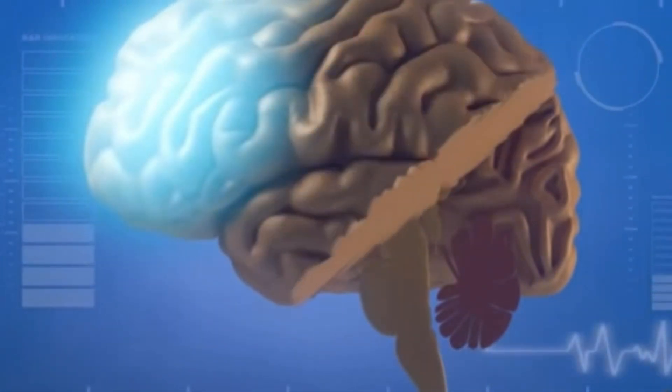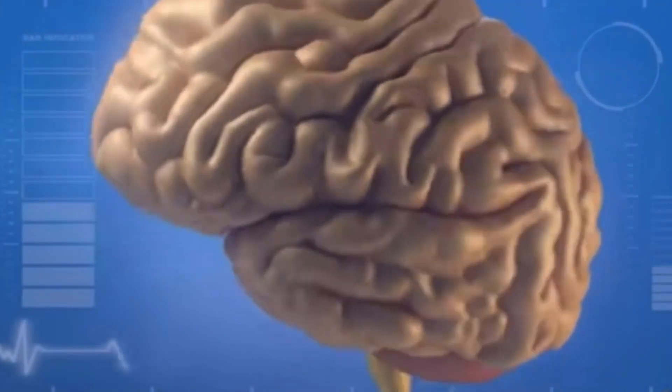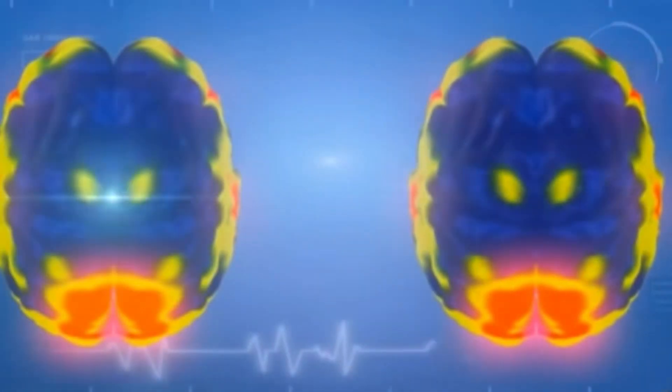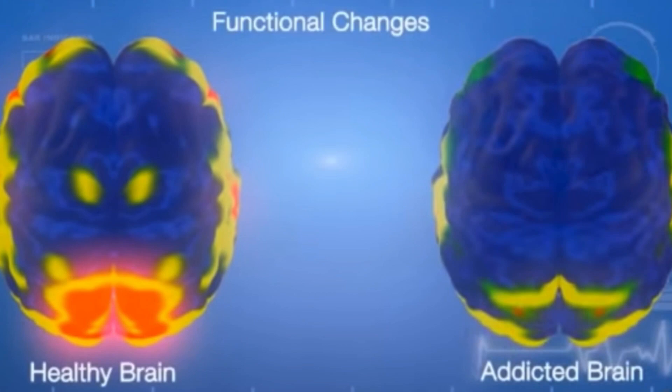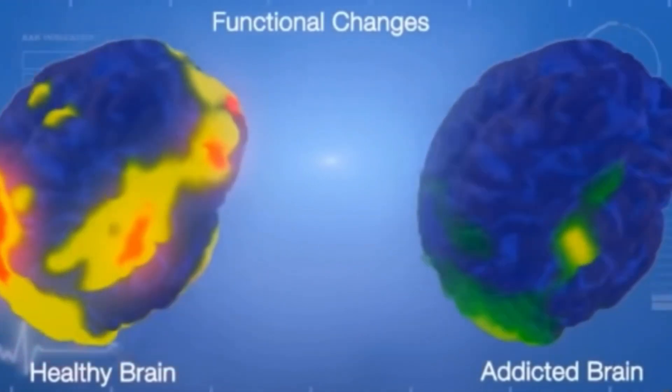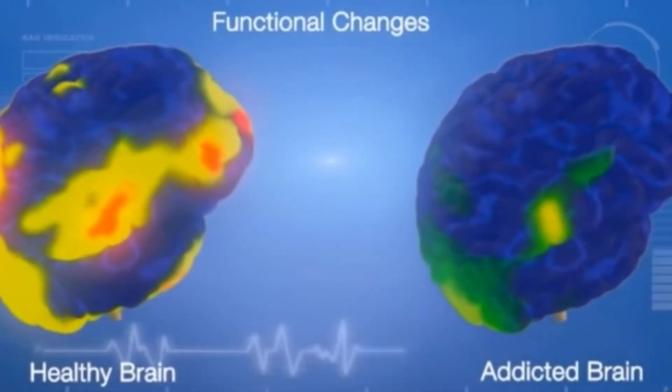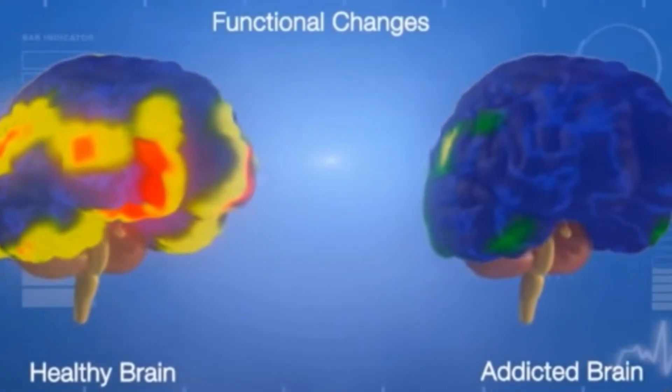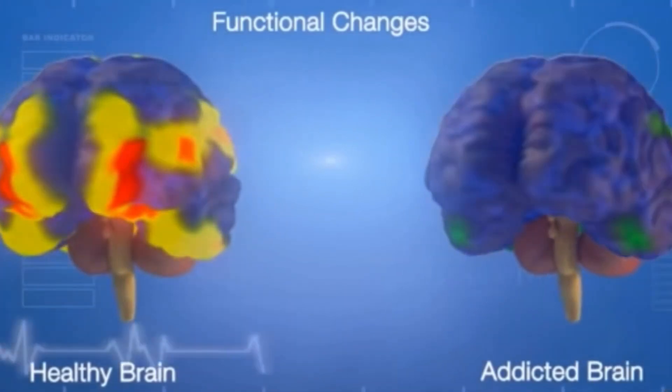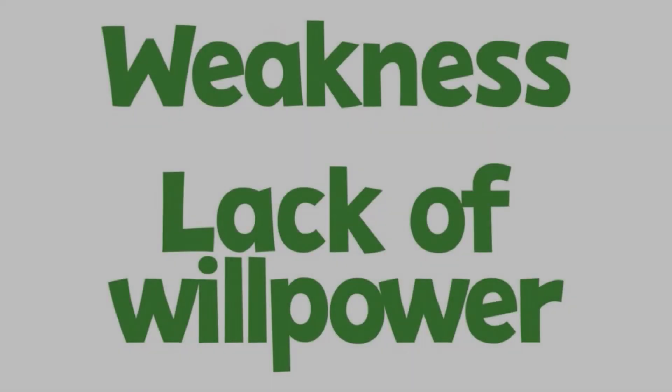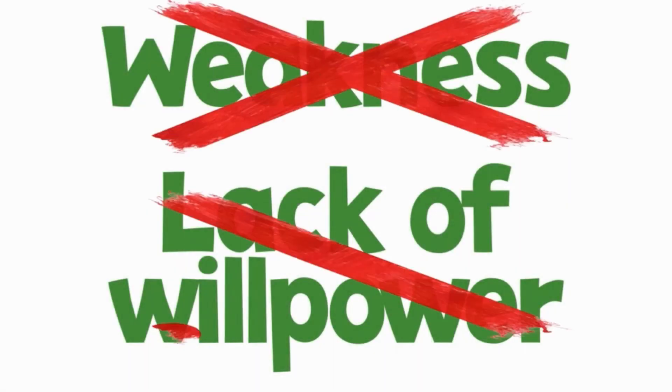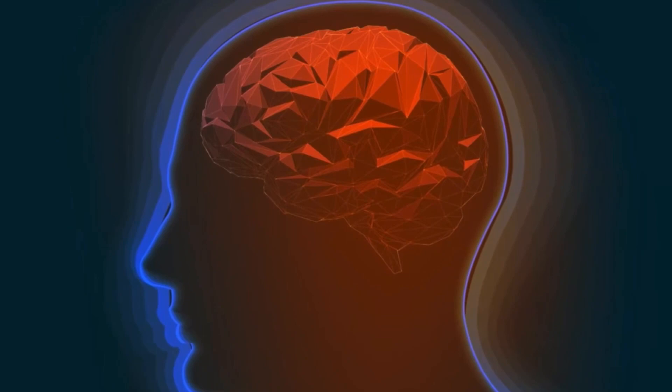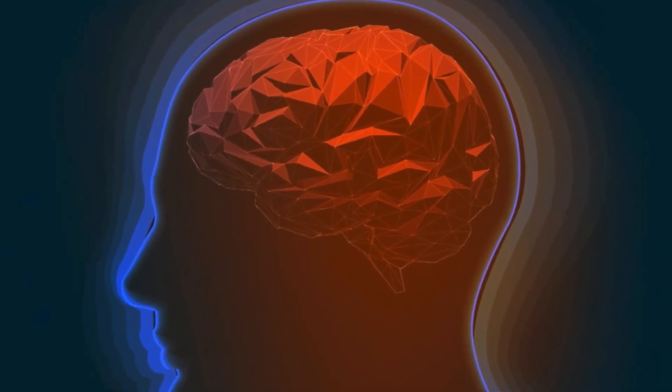These reward pathways make us feel pleasure and are activated by stimuli such as food, water, or sex. These same areas are also involved in addiction. Alcohol and drug use changes the way the brain works. Addiction is not due to weakness or a lack of willpower. Instead, it's a chronic disease involving changes in the brain.